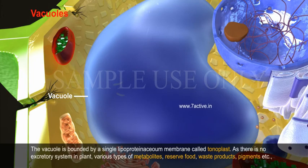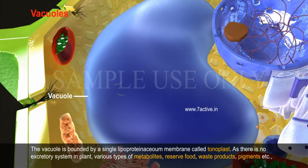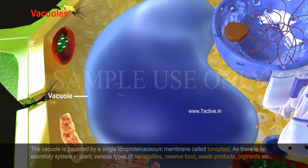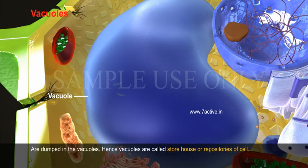The vacuole is bounded by a single lipoproteinaceous membrane called the tonoplast. As there is no excretory system in plants, various types of metabolites, reserved food, waste products, pigments, etc. are dumped in the vacuoles. Hence, vacuoles are called the storehouse or repositories of the cell.